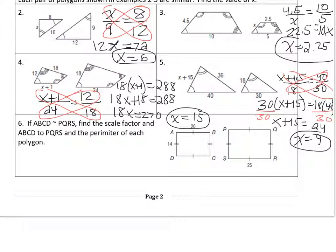Last example. If these two rectangles, well, they appear to be rectangles, ABCD is similar to PQRS. Find the scale factor from ABCD to PQRS, and then the perimeter of each. Alright, scale factor first. So if they are similar, let's look at the proportions.